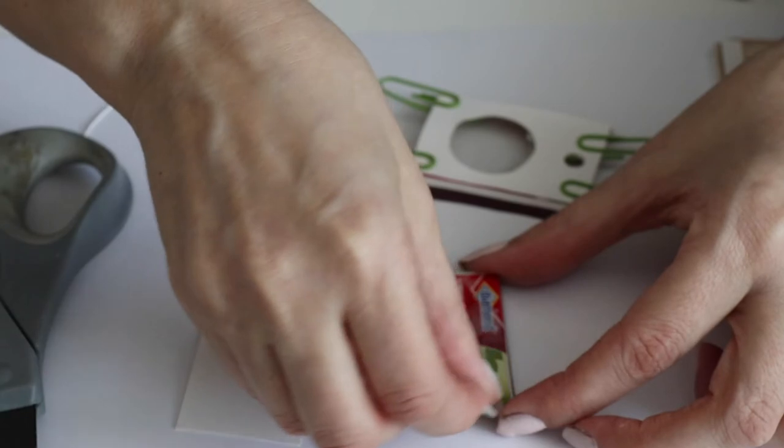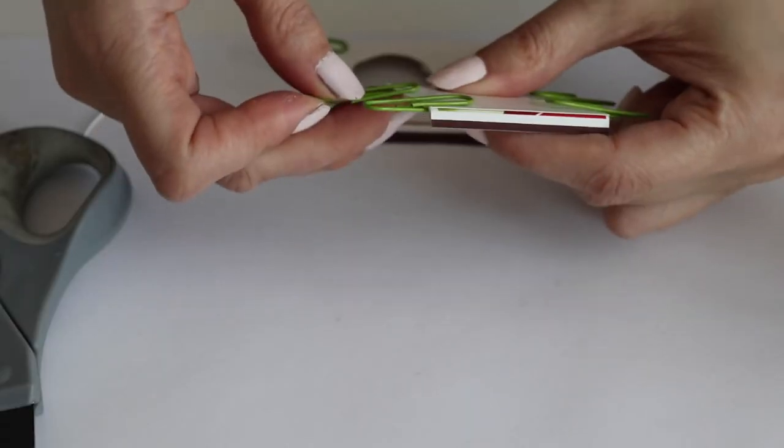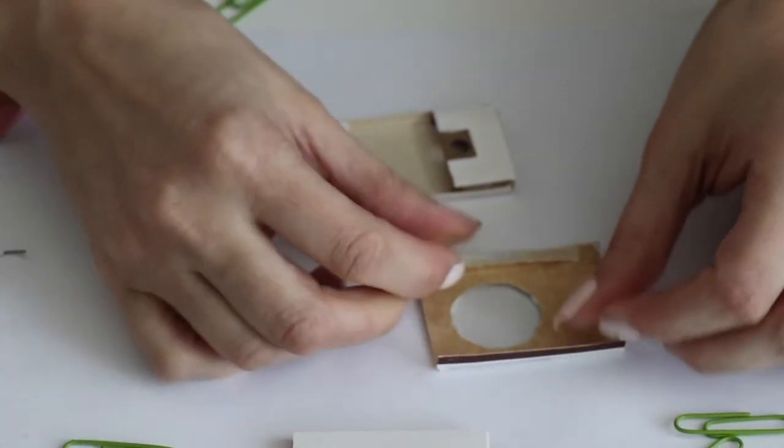Glue the cardstock to the back. Once dried, you can rub out any dents left by the paper clips.